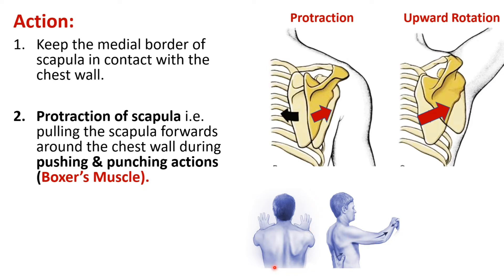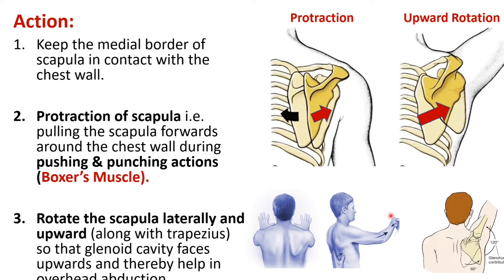Because of its role in protraction, this muscle is also known as the boxer's muscle. The third action is that it rotates the scapula upwards or laterally, so the glenoid cavity faces more upwards. This is done with the help of the trapezius muscle, and here we can see the scapula rotated upwards with the glenoid cavity facing upward.